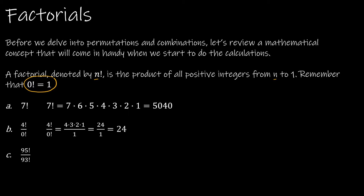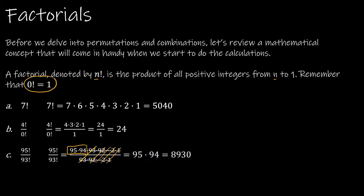I really like this question: 95 factorial divided by 93 factorial, because it's important that we understand how to cancel out values. 95 factorial is 95 times 94 times 93 times 92, all the way down to one. 93 factorial is 93 times 92 times 91, all the way down to one. So we can cancel 93s, 92s, 91s, etc., all the way down to one. That leaves us with just 95 times 94.